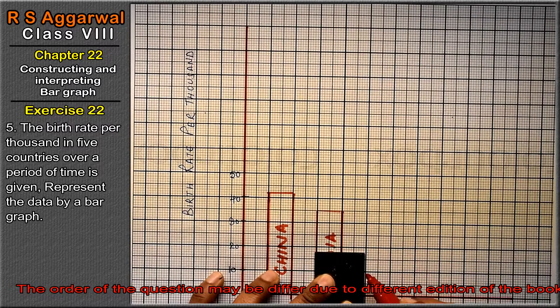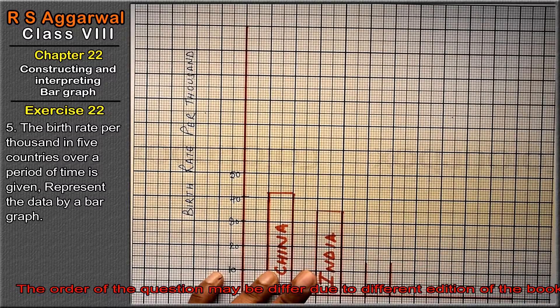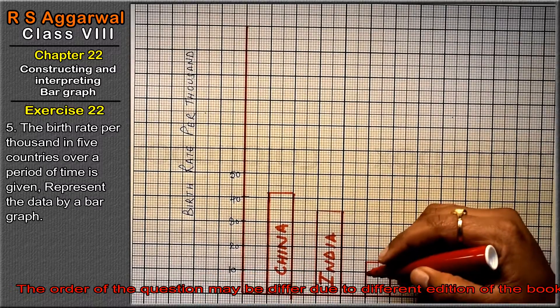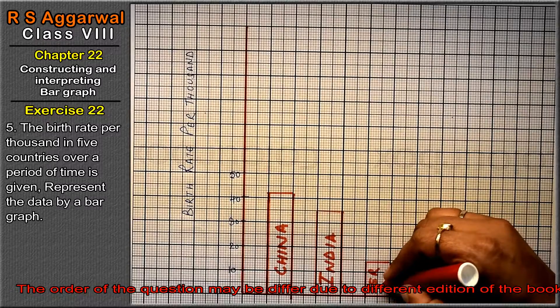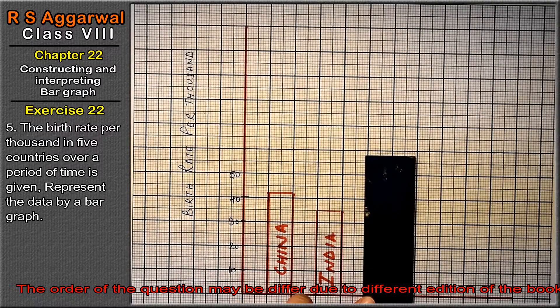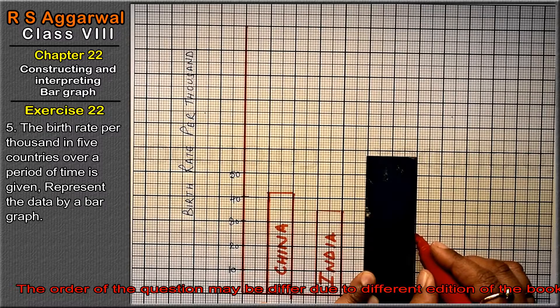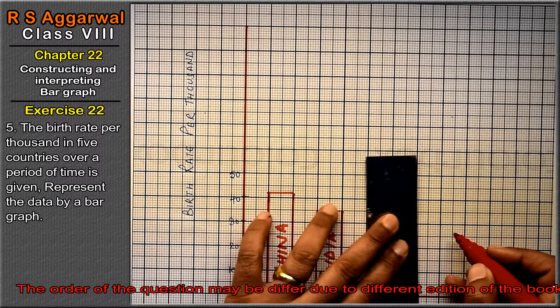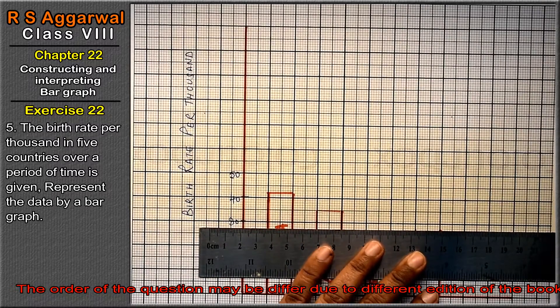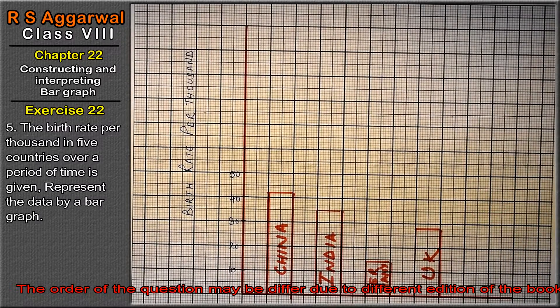1 block and 4 dots. 1 block, 2 blocks: 25, 26, 27, 28. This is UK. Next is Sweden, 21.